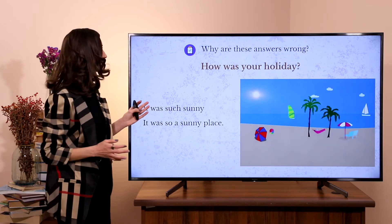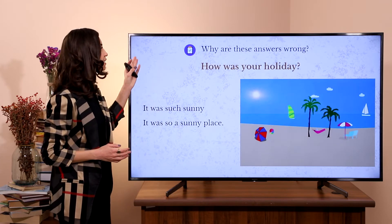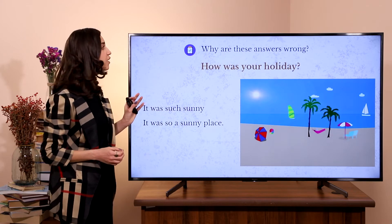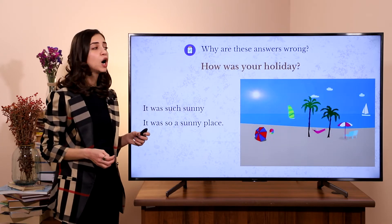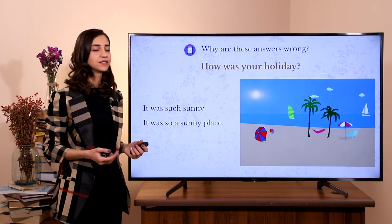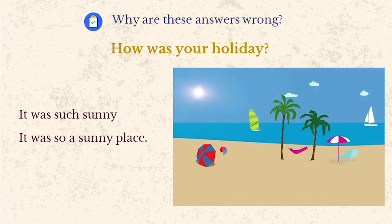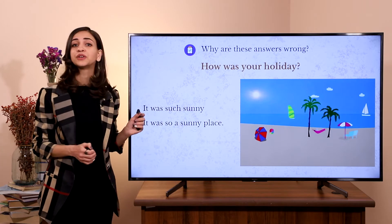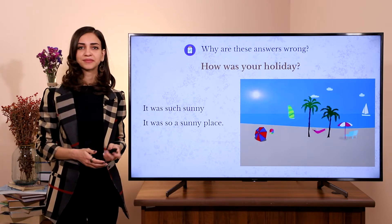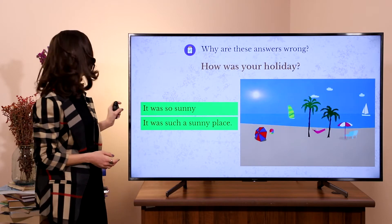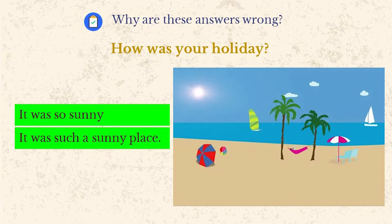Now, my dear friends, let's do the following task. Why are these answers wrong? Let's read the question. 'How was your holiday?' — 'It was such sunny.' — 'It was so a sunny place.' Now, dear students, let's understand why these sentences are wrong and what the correct versions are. And the right answers are: 'It was so sunny' and 'It was such a sunny place.'